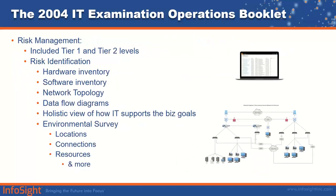The 2004 booklet also noted multiple tiers for risk management and additional verification where risk warranted it. It included risk identification within hardware inventories, software inventories, network topologies, data flows and diagrams, holistic views of how IT supports business goals, and environmental surveys that included locations, connections, resources, and more.